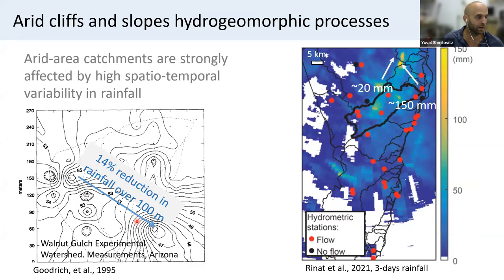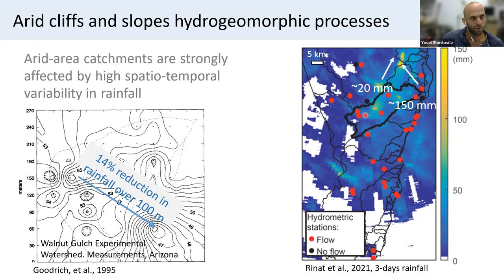Arid landscapes and catchments in general are influenced by rainfall characteristics. Rainfall in arid areas is quite unique, firstly characterized by high spatial and temporal variability. An example is this map from the Wollongrab experimental watershed interpolated from rain gauges — you can see that over just 100 meters there is a rainfall decrease of about 14%. Another example from Rinat 2021 is a radar map for a three-day rainfall event showing very spotty rainfall cores and large spatial gradients: some places receive 150 millimeters during the storm, while a few kilometers away rainfall is almost zero.